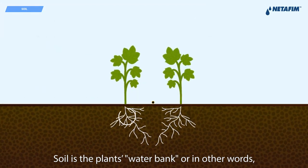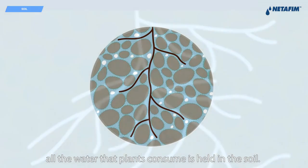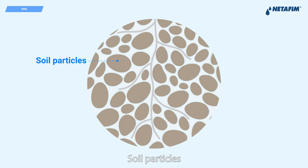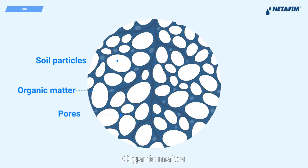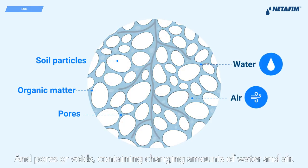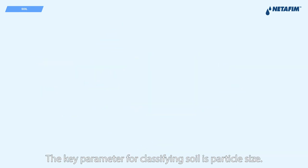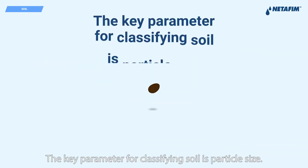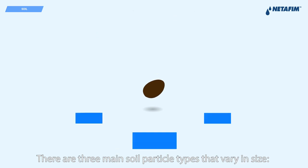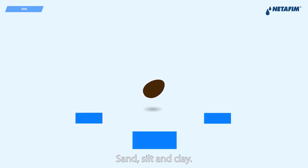Soil is the plant's water bank — all the water that plants consume is held in the soil. Soil has three main components: soil particles, organic matter, and pores or voids containing changing amounts of water and air. The key parameter for classifying soil is particle size. There are three main soil particle types that vary in size: sand, silt and clay.